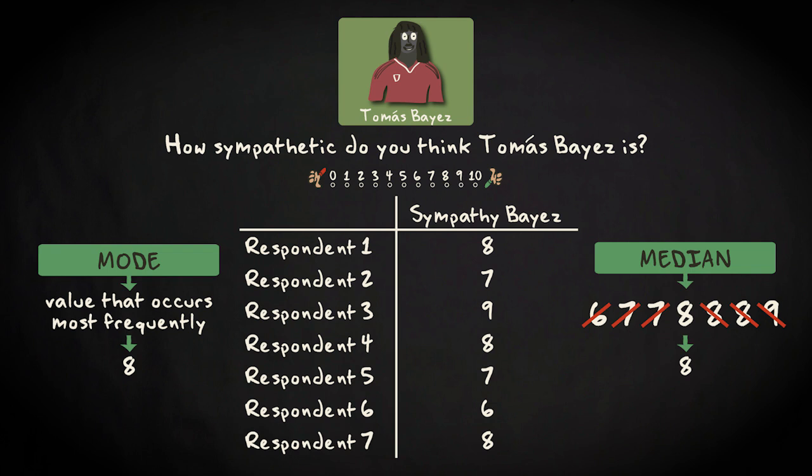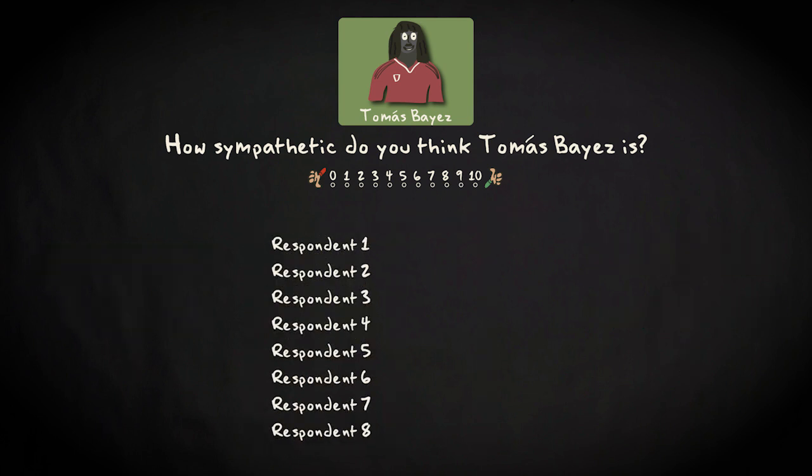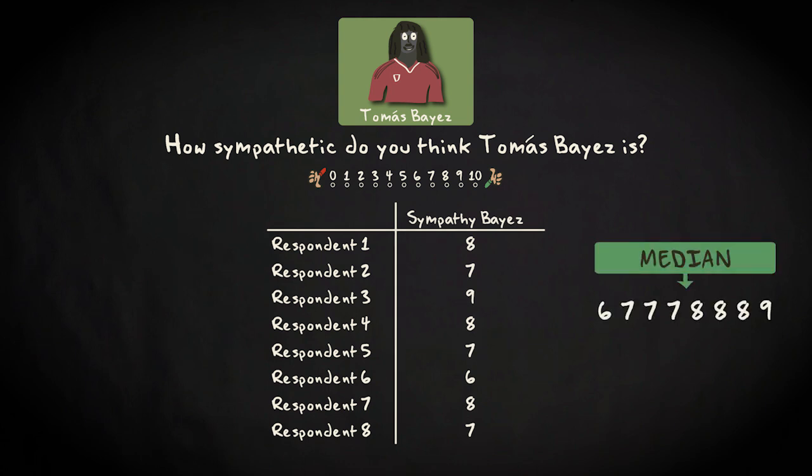It is slightly more complicated if we have an even number of cases, instead of an odd number of cases. Imagine we haven't asked 7, but 8 people what they think of Thomas Bayes. This is the data matrix. And this is the order of the values from low to high.